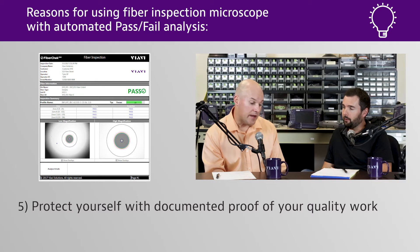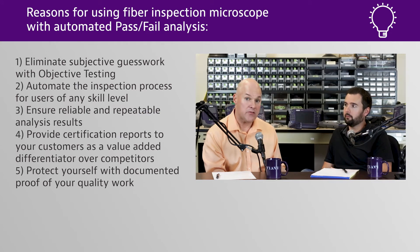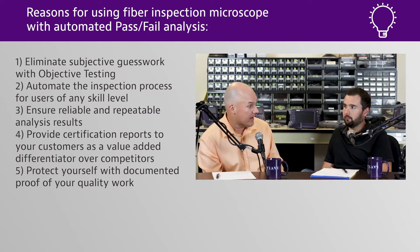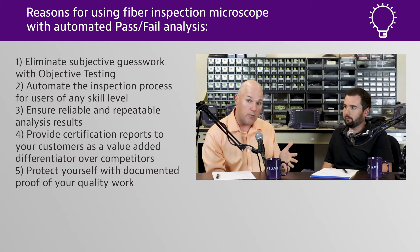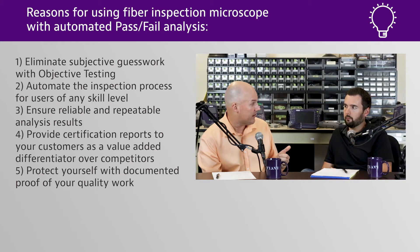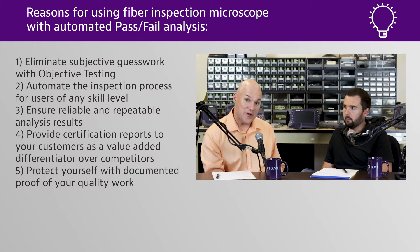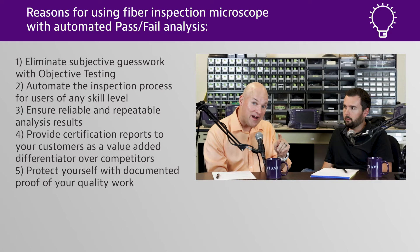Having a good inspection scope is important, but having that software to go along with it to do that automated pass-fail — that's mission critical. Because we can all take a look at it, and whether it's a scratch, a pit, or some contamination, it's all subjective. But when you have the software, it eliminates the human subjectivity. Kind of the running joke is: if you could tell the difference between a five-micron scratch and a six-micron scratch, you're a heck of a guy.